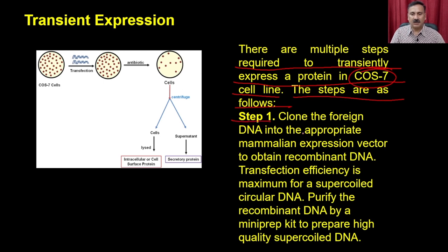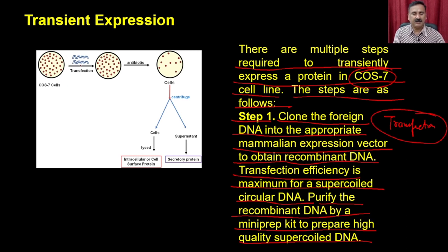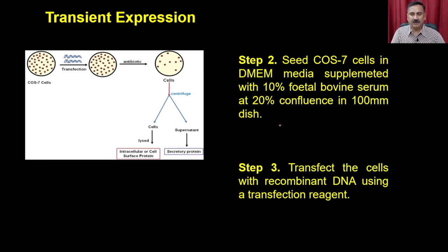There are multiple steps required to transiently express a protein in COS7 cell lines. In step one, you clone the foreign DNA into an appropriate mammalian expression vector to obtain the recombinant DNA. Transfection efficiency is maximum for supercoiled DNA, so you purify the recombinant DNA by a miniprep to prepare high-quality supercoiled DNA. Then you plate uniform cells — you can plate 10^7 cells and perform the transfection.